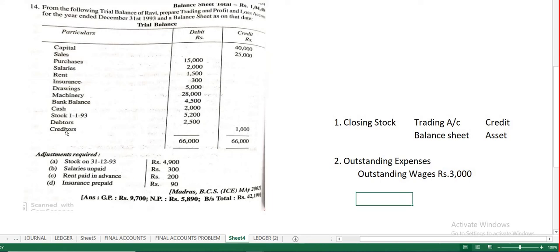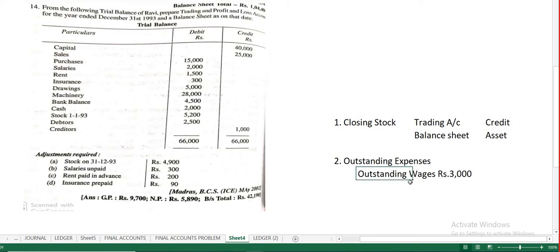In the trial balance, wages will already be there — say 10,000. Now if outstanding wages is given in the adjustment, you need to know where to show its effects. As I said, every adjustment appears in two places: one is confirmed in the balance sheet; the other is either trading account or profit and loss account depending on the item.